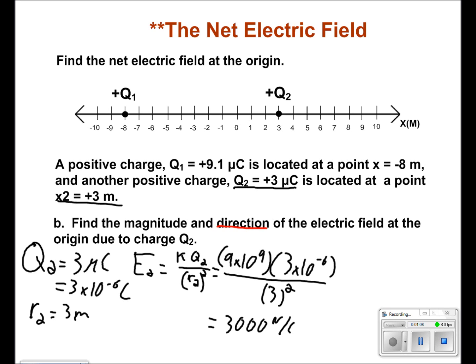As for the direction, we know that positive charges push away from themselves. This means that the electric field E2 is going to the left.